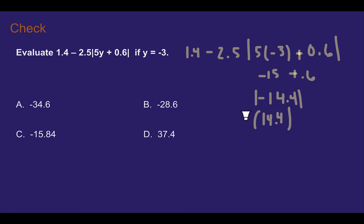So positive 14.4. Now I can multiply that by negative 2.5. So finally then I would subtract from 1.4. 1.4 minus negative 2.5 times 14.4. 2.5 times 14.4 is 36. And it's negative so that stays negative. Finally 1.4 minus 36 is going to bring us to negative 34.6.